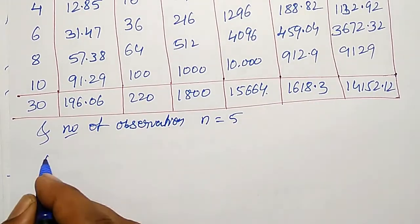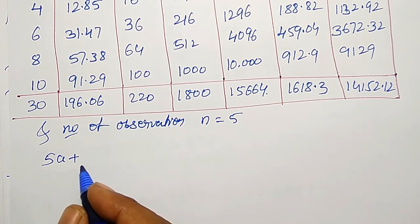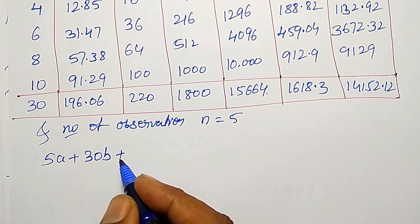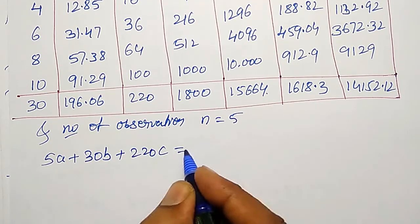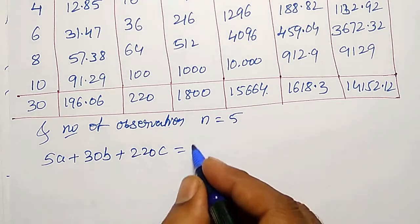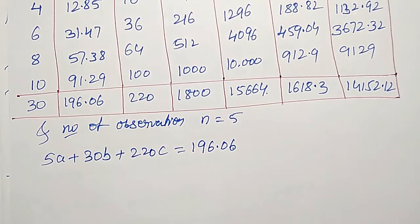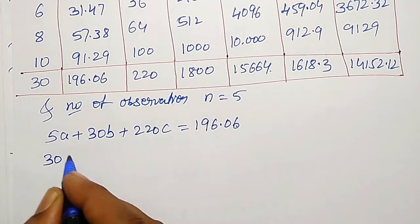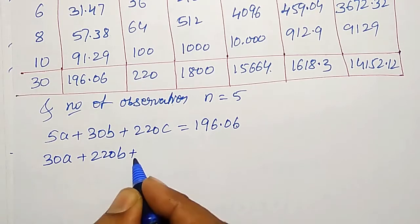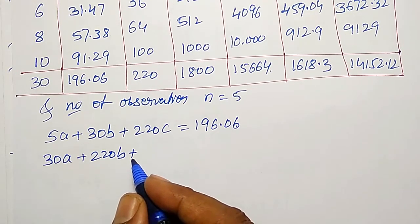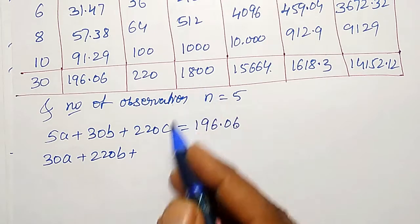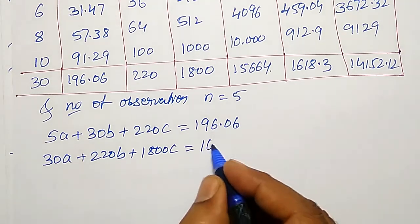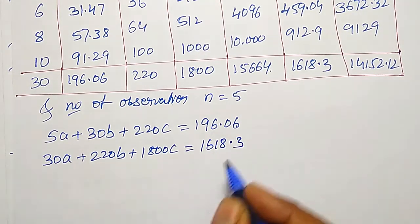Therefore, na, that is 5a plus summation xb, summation x is 30b plus summation x square c, x square is 220c equal to summation y, 196.06. Like that, second equation: summation xa, 30a plus 220b, summation x square b plus summation x cube, x cube is 1800c equal to summation xy, that is 1618.3.